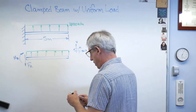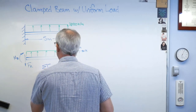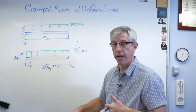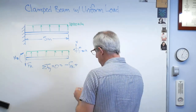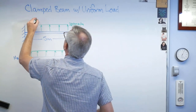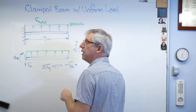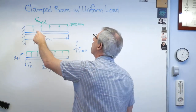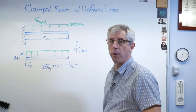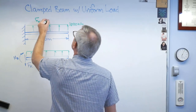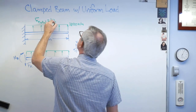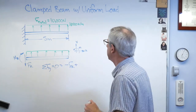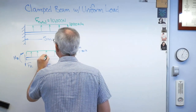Let's write our equations of static equilibrium. Sum of forces equals zero: that's minus F_R, because my positive is up so that's negative, plus F_total. F_total is the sum of the uniform load as you go down the wing — kind of sounds like an integral, and it is. I'm finding the area of that shape. The area of a rectangle is base times height, so it's 5 meters times 2000 newtons per meter, which equals 10,000 newtons.